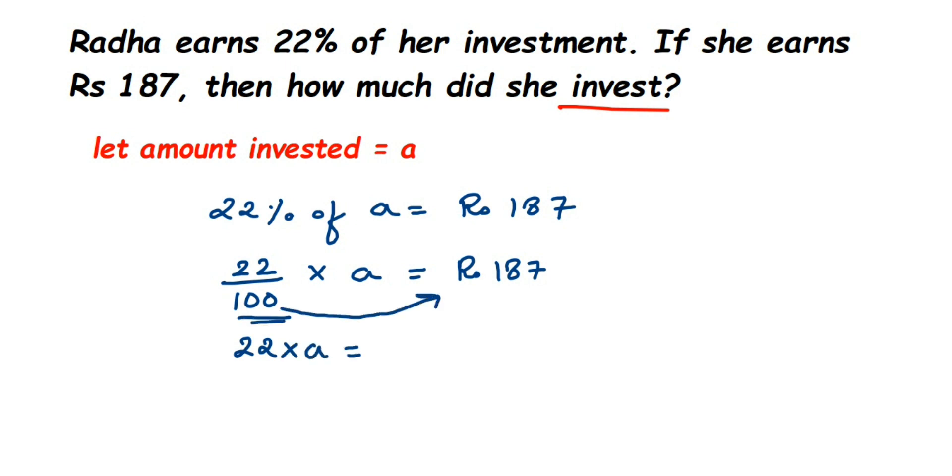Now 22 is in multiplication. When transposed, it comes in division. So a is equal to rupees 187 multiplied by 100 divided by 22. Now here I can cancel 187 and 22 directly in 22 table, or you can divide with some other, like you can cancel this in lower, like small numbers, and you can do it.